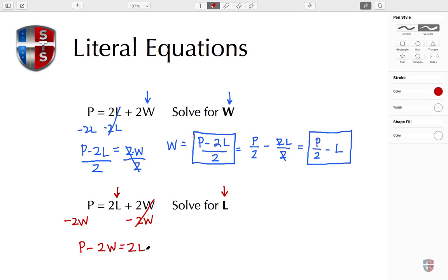Again, I want to solve for L. The 2 and the letter L are together through multiplication, so the opposite operation is division. I'm going to divide by 2. Actually, let me erase and do it the same way I did the other one. I'm dividing everything by this 2.